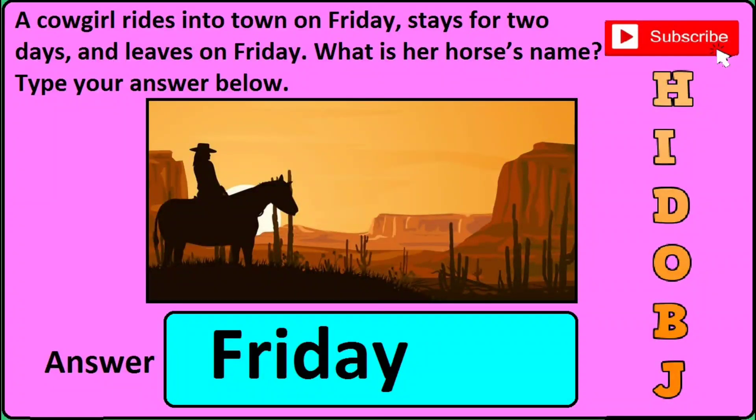Now in version two of this same question, just read the question. It is asked: a cowgirl rides into town on Friday, stays for two days and leaves on Friday — what is her horse's name? Type your answer below. The correct answer will be Friday, so just type Friday.